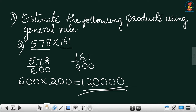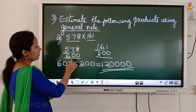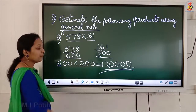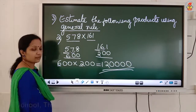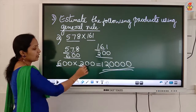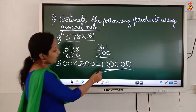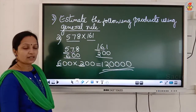So the general rule: if the word 'general rule' is in the question, always round off the number to its greatest place, then do the multiplication. This rounding is clear for everyone — we already studied rounding. Round off the number to the greatest place, then do the multiplication. If zeros are coming after, multiply the digits first, count the zeros in the question, and put that many zeros in the answer.